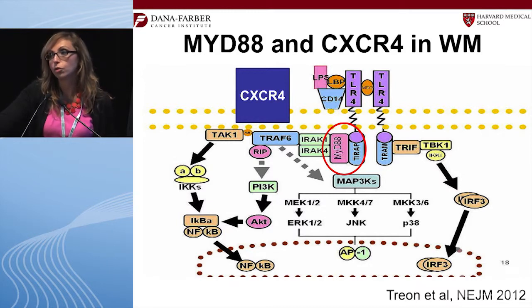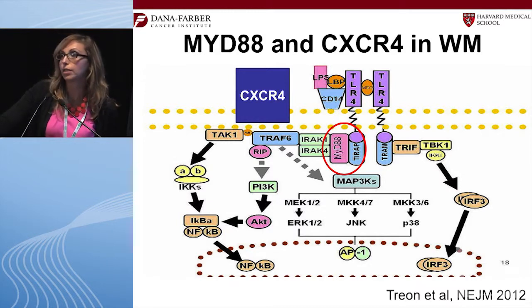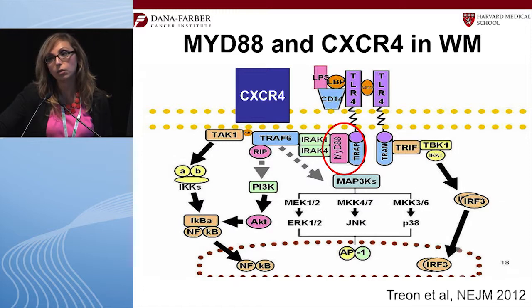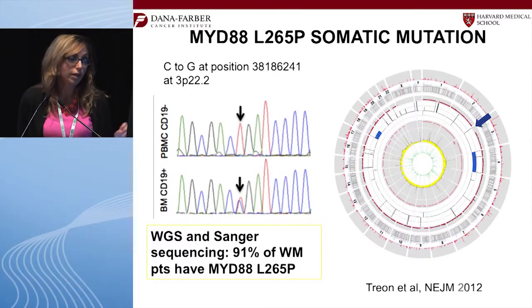All of these studies were done before the era of whole genome sequencing and whole exome sequencing. The best example of how sequencing has changed our understanding of B-cell malignancies is actually Waldenström, where whole genome and whole exome sequencing in 30 patients — presented by Steve Treon in the New England Journal of Medicine last year — showed that over 90 percent of patients had a somatic mutation in MYD88. Also, 20 percent of patients had a mutation in the chemokine receptor CXCR4, which is being studied now.